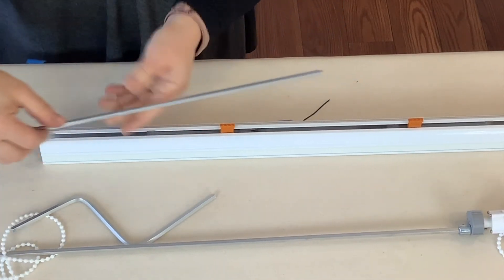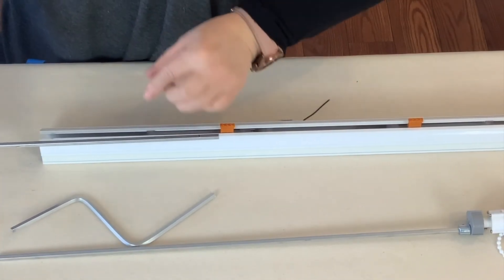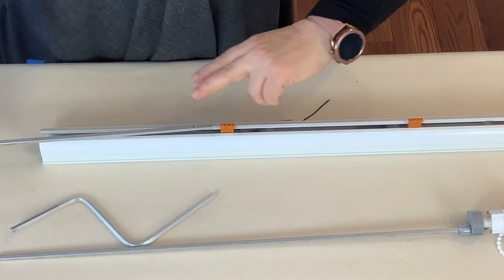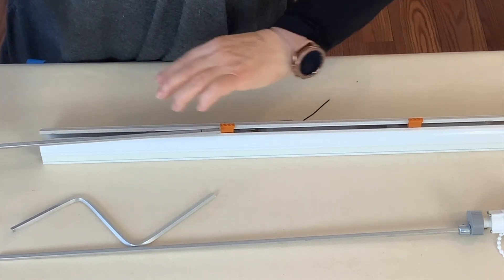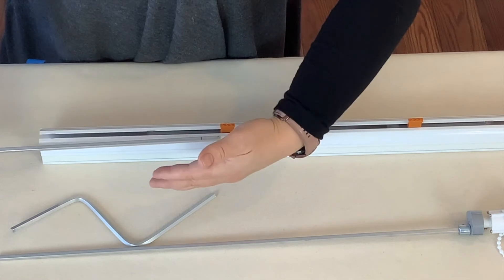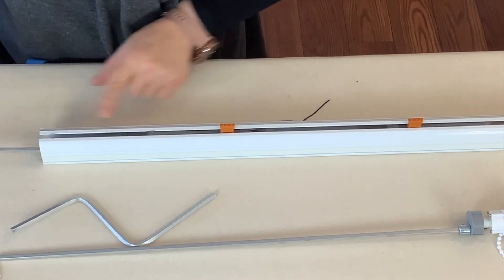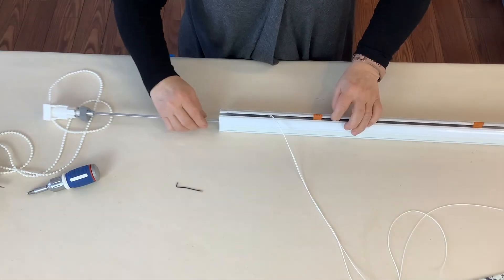If everything is aligned, then you just thread that through. There are two parallel rods going on, so this is your further one, not the one that's close to you. It goes through the first drum.